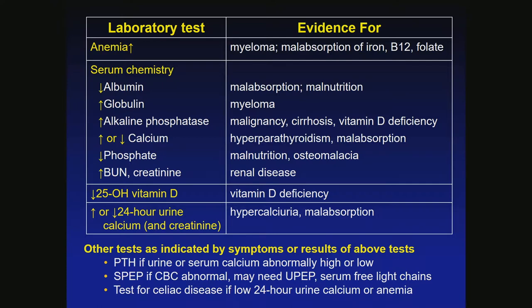Vitamin D deficiency is again important, and so is the 24-hour urinary calcium. If we see an abnormality in calcium, we get a PTH. If there's anemia or worry about myeloma in an older patient with low white count and low platelets, we think of myeloma and get urine protein electrophoresis or free light chains. If we're thinking malabsorption, we test for celiac disease.